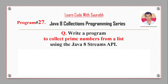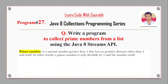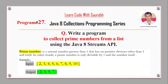Hi friend, welcome back to another video. Today I'm going to show a program to filter prime numbers from a list using the Java Stream API. A prime number is a natural number greater than one that has no positive divisors other than one and itself. For example, from the list two, three, four, five, six, seven, eight, nine, ten, we will get two, three, five, seven as prime numbers.